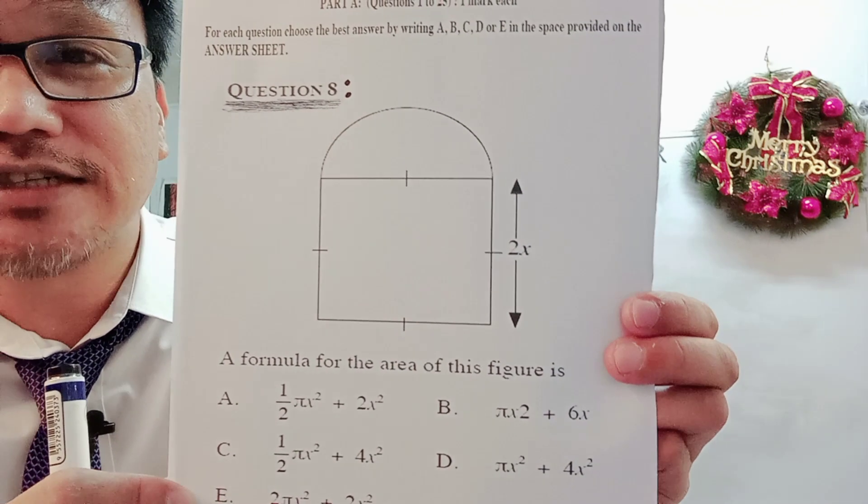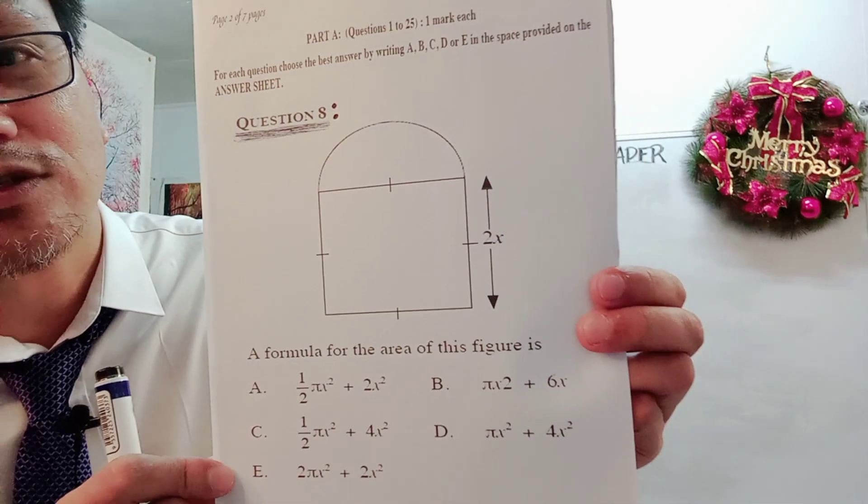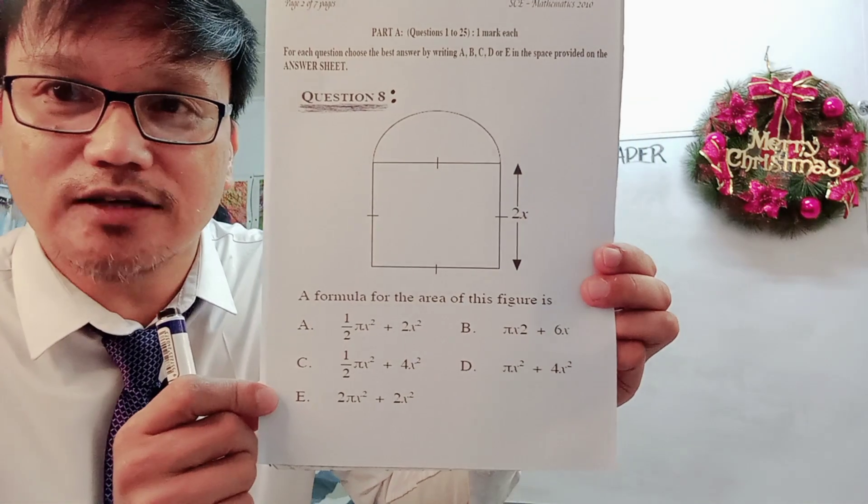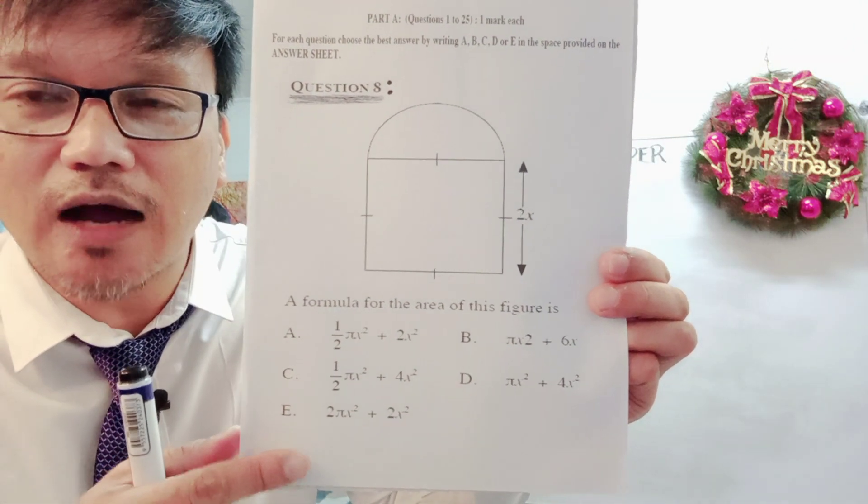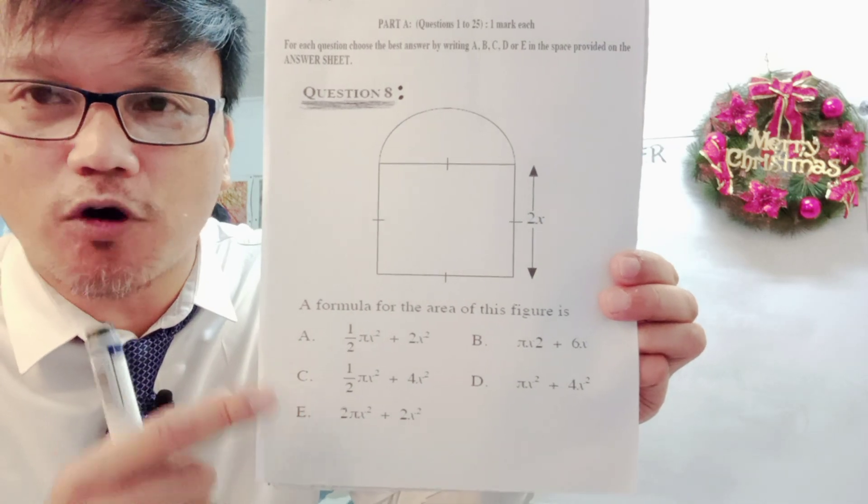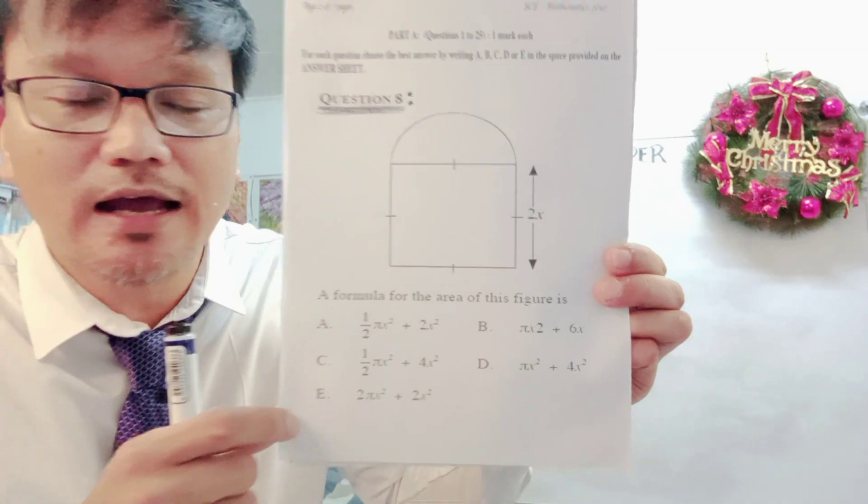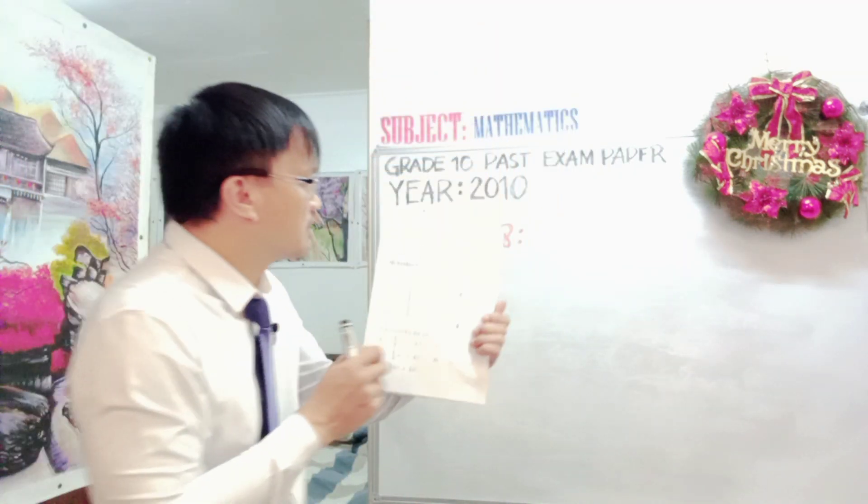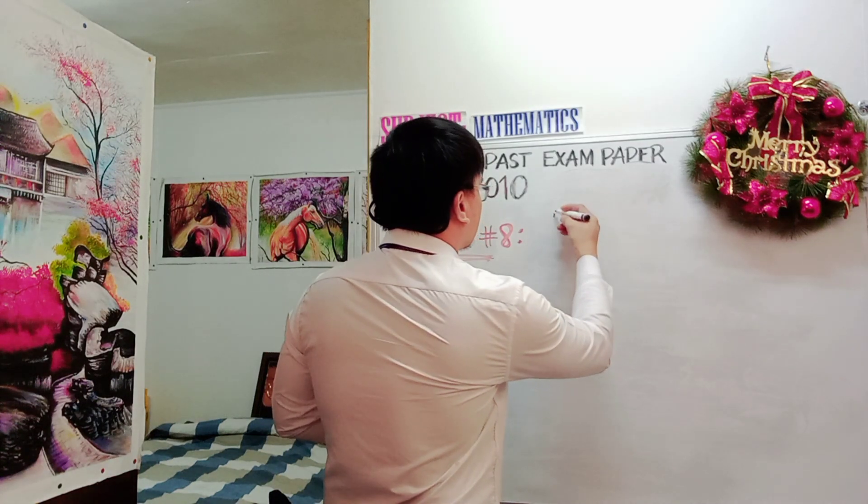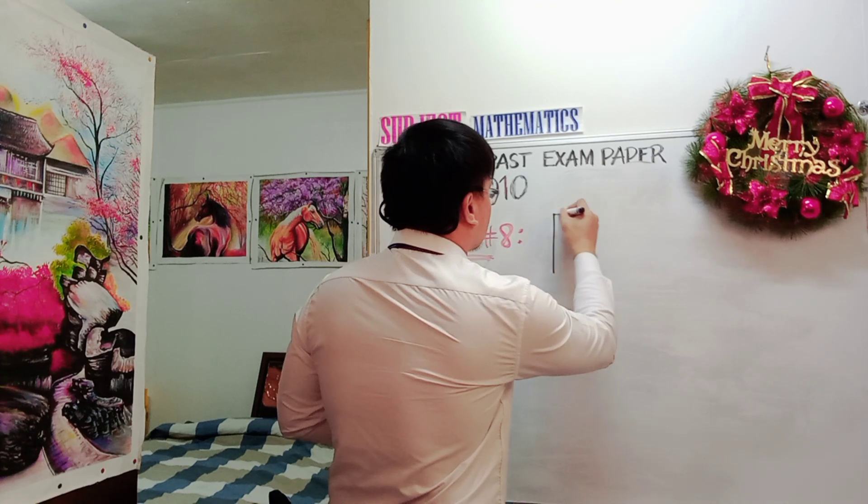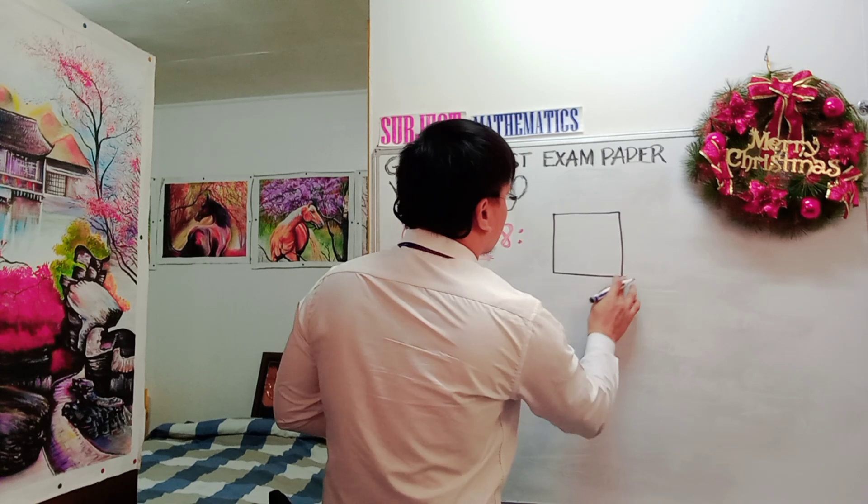From this given diagram with the given sides in algebraic expression, you are asked to form a formula for the area of this total composite shape. The composite shape has the square and the semicircle. If you look at it, the one side of a square is measured 2x.